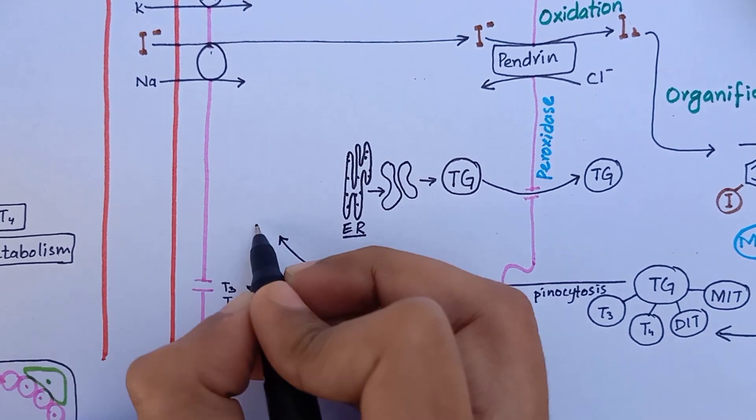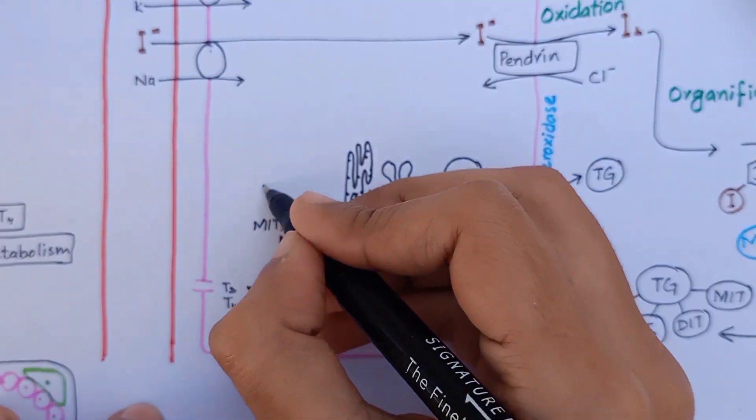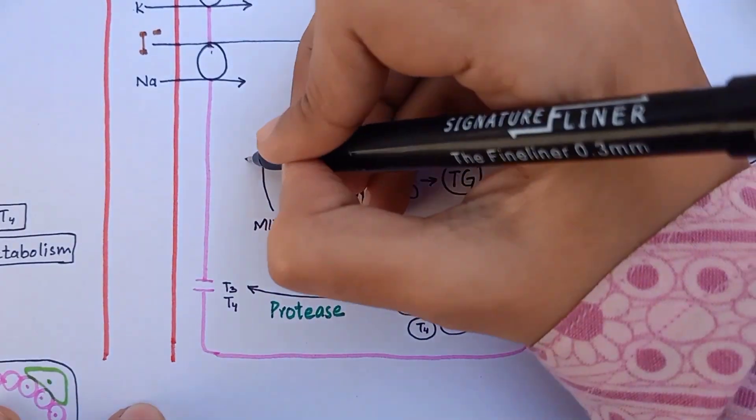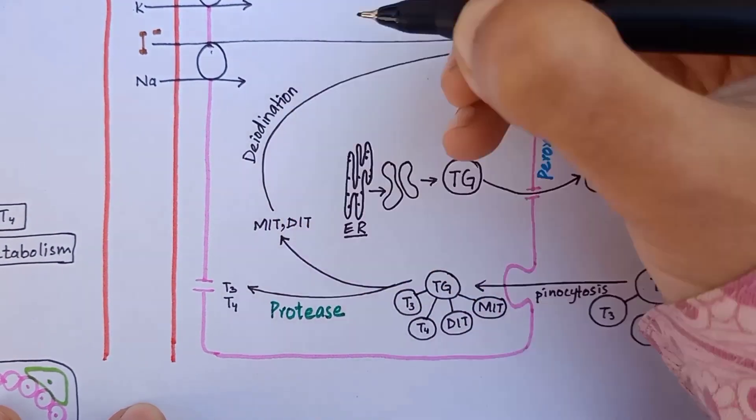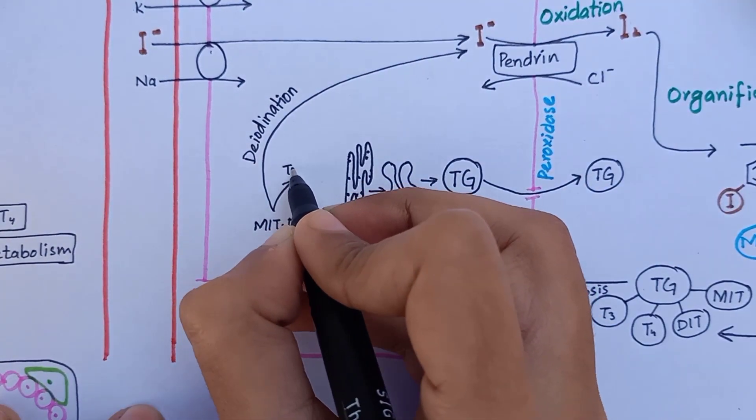Protease enzyme digests this thyroglobulin molecule and releases triiodothyronine and thyroxine in free form. While MIT and DIT are deiodized, releasing iodine that is recycled and free tyrosine that is also recycled to form more thyroglobulin molecules.